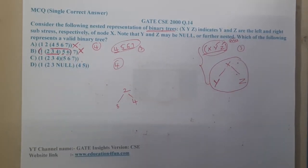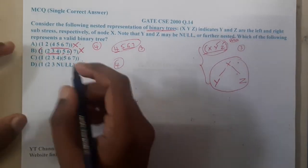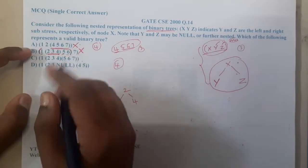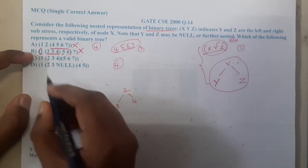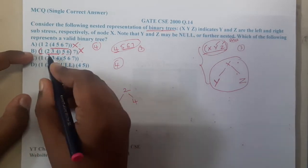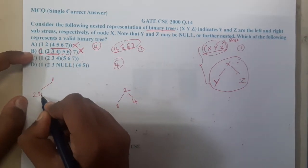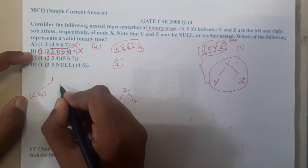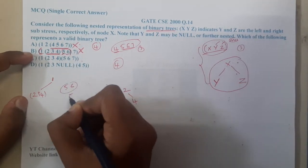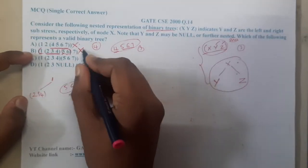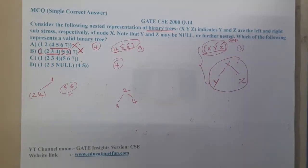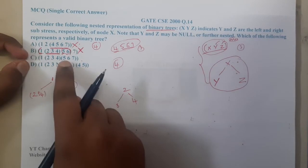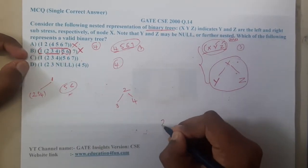Let us also try the outside-to-inside method for option B. Starting from outside: one will be the root, and what is the left child? It would be two, three, four. What will be the right child? Here we are having two children — five and six — with no clarity. So in that way also, option B is wrong.